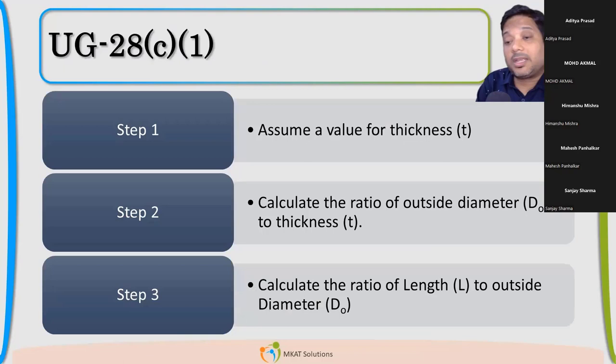So let us see, we selected D0 by T by assuming some thickness. What thickness we should assume? We will see when we take some example. That time we will understand it in a better way. So let us consider you assumed one thickness. Based on that, you calculated D0 by T. If you got greater than 10, then we can select 28C1. The step one is to assume a thickness.